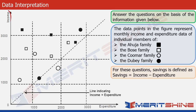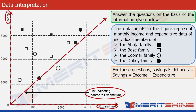The incomes of these individual members are shown on the y-axis, and the expenditure is shown on the x-axis. There is a diagonal line in the middle which represents income equal to expenditure, so anybody who falls on that line does not save anything — their income equals their expenditure.